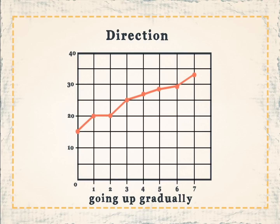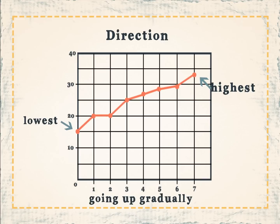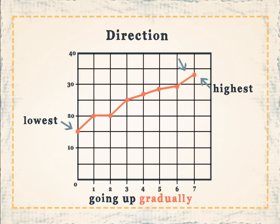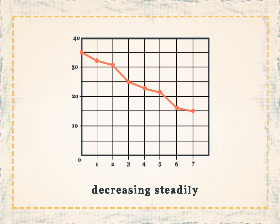This line graph demonstrates the direction of the coordinates. This is the lowest coordinate and this is the highest coordinate. As you can see, the coordinates are going up gradually. This graph shows the coordinates decreasing steadily.